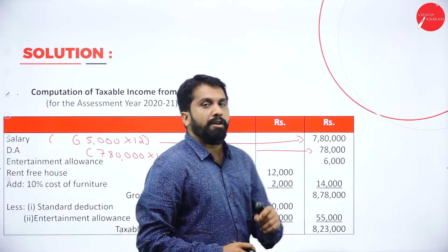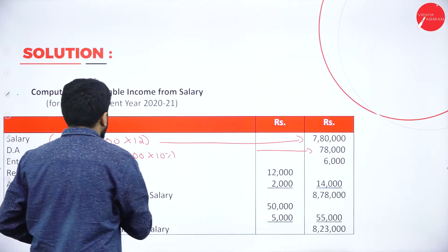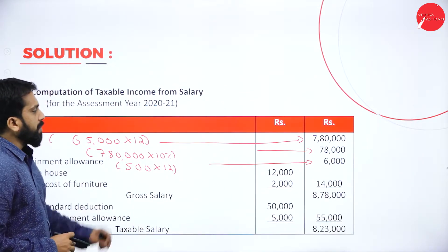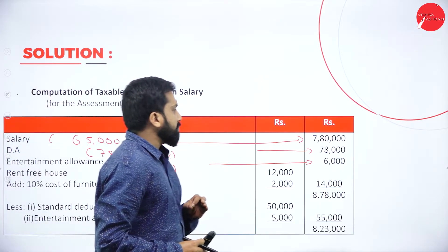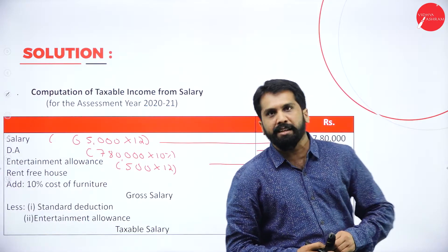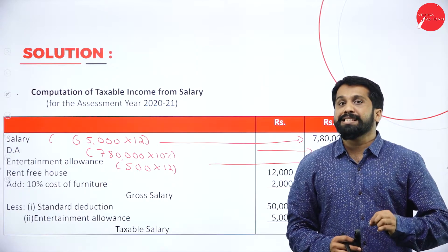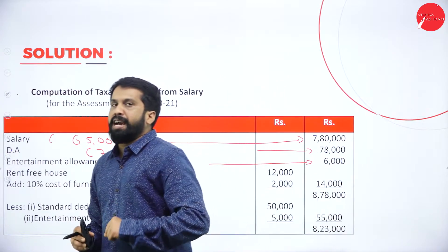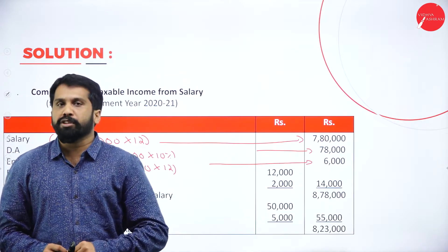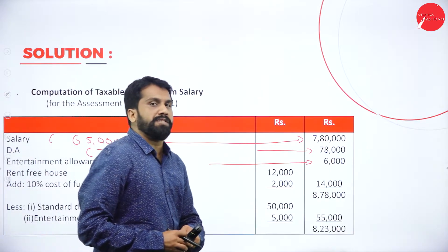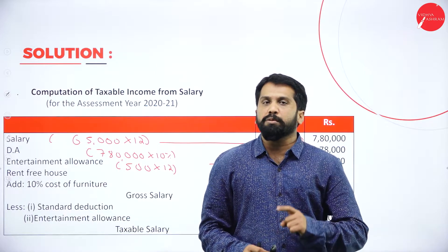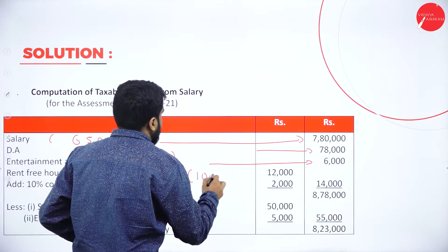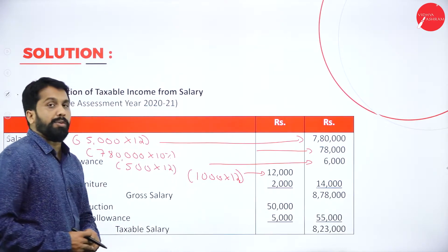Entertainment allowance: 500 per month — 500 into 12 equals 6,000. Your basic pay is 7,80,000, DA is 10% of salary (78,000), and entertainment allowance is 6,000. Now for rent-free house: the employer was paying 1,000 per month as government fees — 1,000 multiplied by 12 equals 12,000.